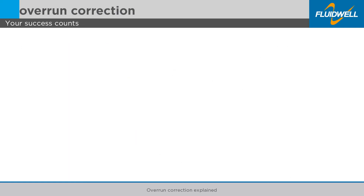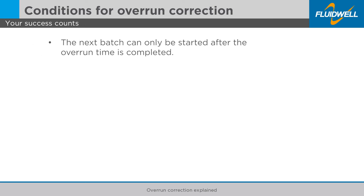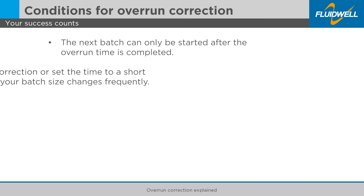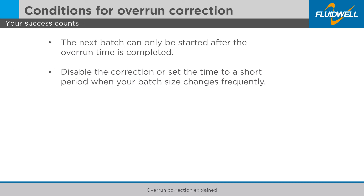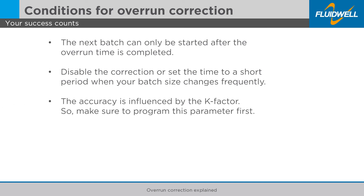Conditions for optimal overrun correction: The next batch can only be started after the overrun time is completed. Disable the correction or set the time to a short period when your batch size changes frequently. The accuracy is influenced by the k-factor, so make sure to program this parameter first.